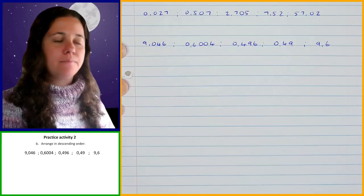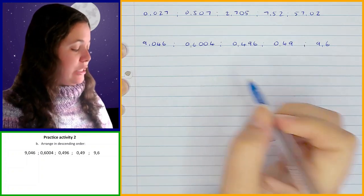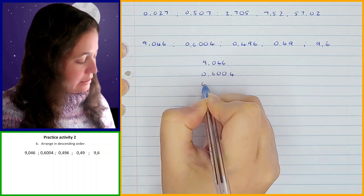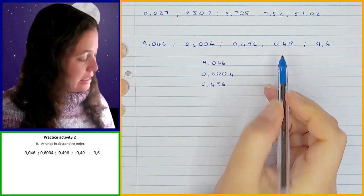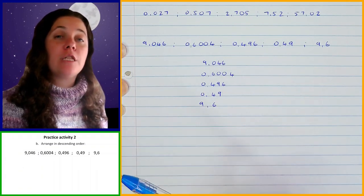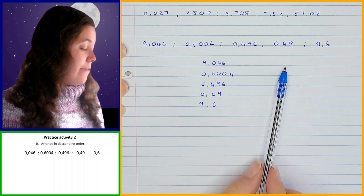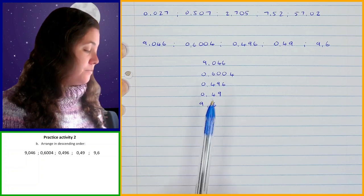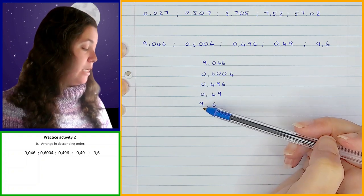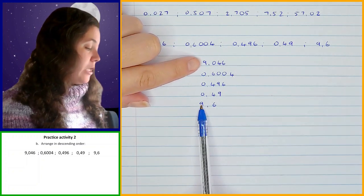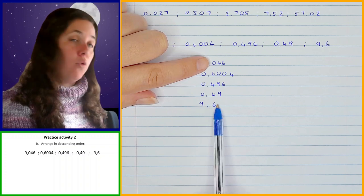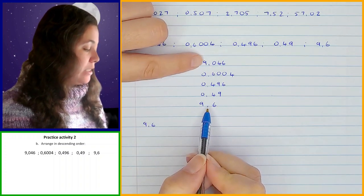Okay, so let's go through that quickly. These are the fractions, and I'm going to write them underneath each other: 9.046, then 0.6004, then 0.496, then 0.49, and finally 9.6. In this case I'm trying to arrange them from biggest to smallest — descending order. So I'm first looking for the biggest, starting from the left at my ones position. These have nothing, but 9.046 and 9.6 both have got 9, so they are going to be bigger. Now comparing those two in the tenths position: 9.046 has 0 and 9.6 has 6, so 9.6 is the biggest and goes first, then 9.046 is next.